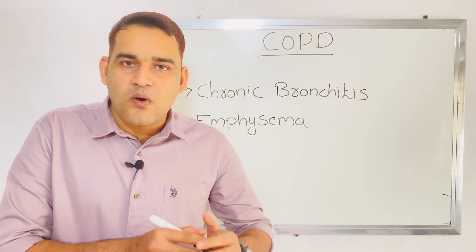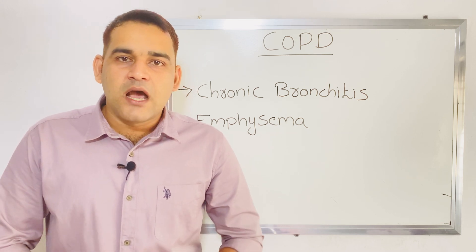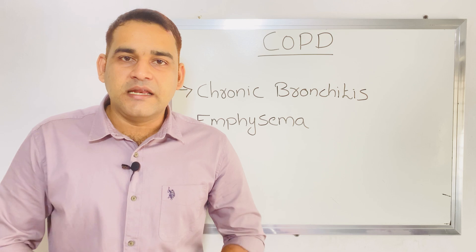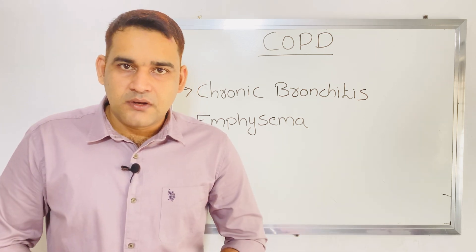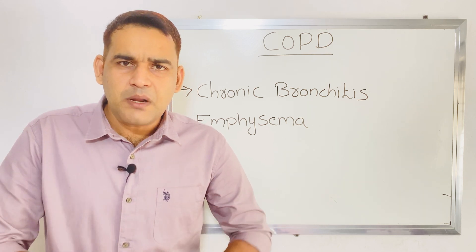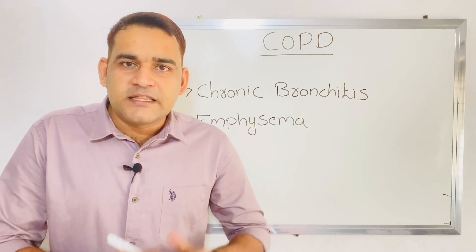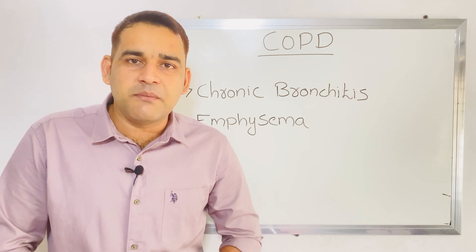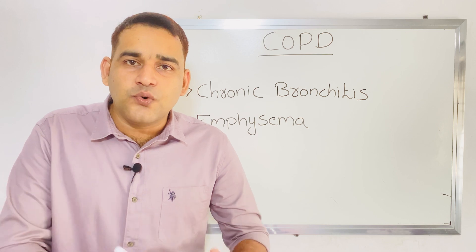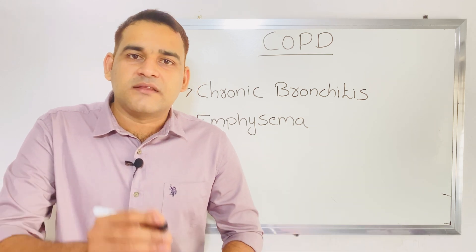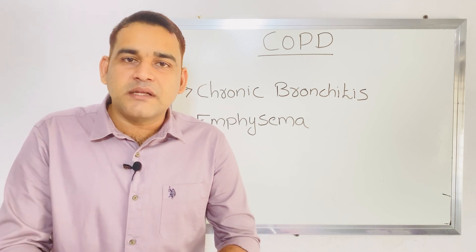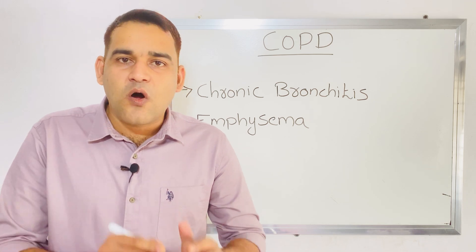What is chronic bronchitis? Chronic bronchitis means chronic productive cough that lasts for minimum three months in a year, in two continuous years. That means this year also minimum three months cough was there, and next year also minimum three months cough was there. Then you can call it as chronic bronchitis.